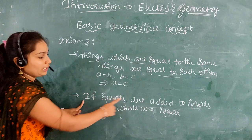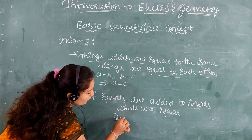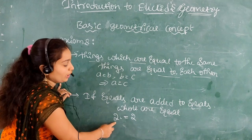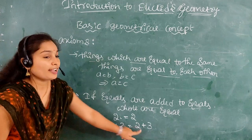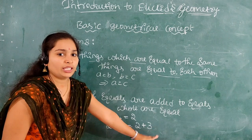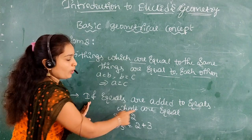The second axiom: if equals are added to equals, the wholes are equal. For example, 2 equals 2. If you add 3 to both sides, 2 plus 3 equals 2 plus 3, so 5 equals 5. Similarly, the third axiom: if equals are subtracted from equals, the remainders are equal — for example, 2 minus 1 equals 1 on both sides.